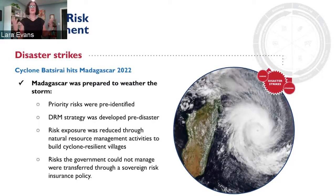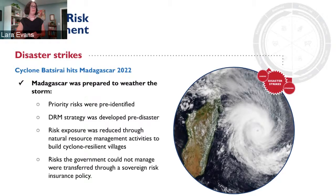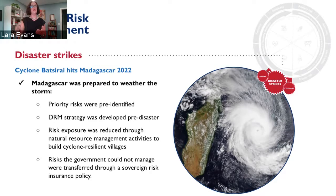Here you have disaster strikes, and in this case in Madagascar, each of the steps just identified were taken. Priority risks were pre-identified, a disaster risk management strategy was developed, exposure to risk was able to be reduced, and communities were able to build cyclone-resistant villages. This is an example of how using each of those tools can lead to a better outcome when disaster strikes.